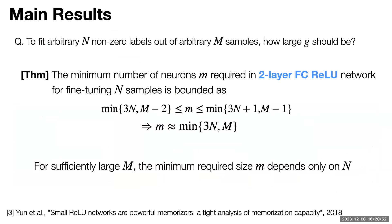Our theorem fully characterizes the exact fundamental bound on the number of neurons N as a function of n and m: up to constants, it is min(3n, m). This generalizes the concept of memorization capacity from a prior paper, which analyzes how expressive a model is at memorizing a finite dataset with arbitrary labels. We use this concept to analyze the fine-tuning capacity of the side-tuning method.